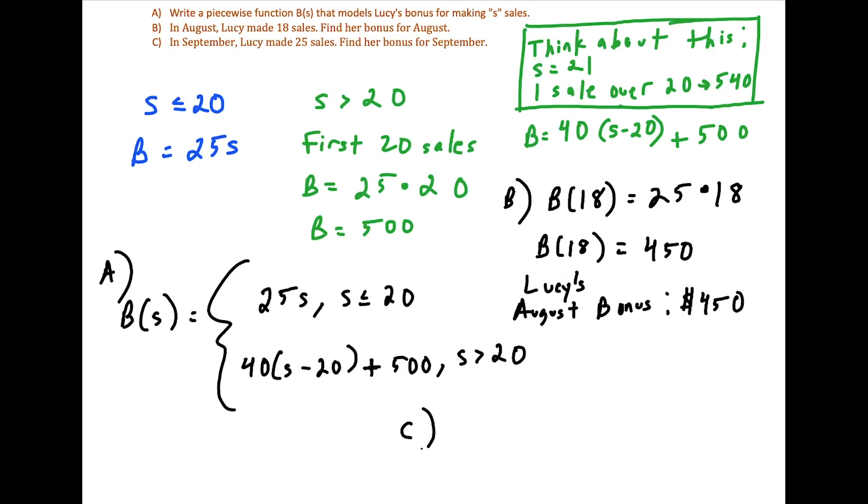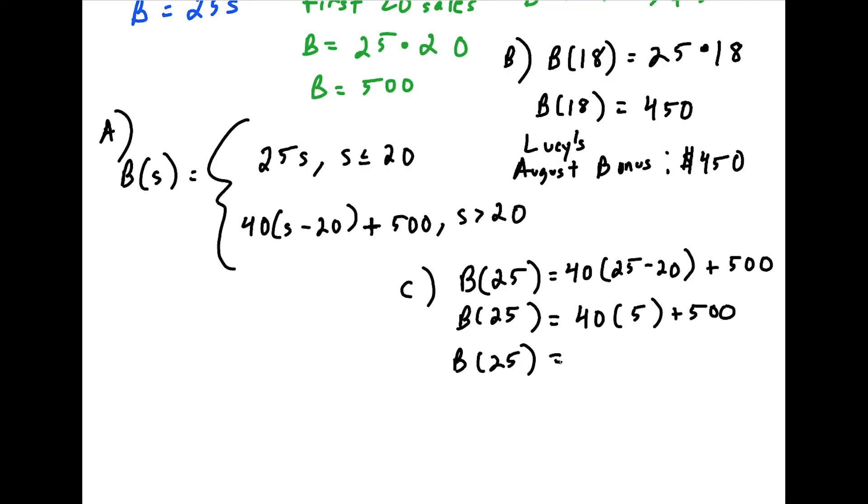Okay, now the last thing to look at here for part C is we want to calculate Lucy's September bonus. And Lucy made 25 sales in September. So if we evaluate our function B of S at S equals 25, well, once again, we just have to say where does 25 fit in the domain. And 25 is greater than 20. So we would plug in S equals 25 to our bottom equation here. So we'd have 40 times 25 minus 20 plus 500. And if we work this out, this tells us here, we're going to have 40 times 25 minus 20 is five plus 500. And we'll just simplify this here. This is going to work out to 200 plus 500, which is 700. So this tells us here that Lucy's bonus in the month of September is $700.